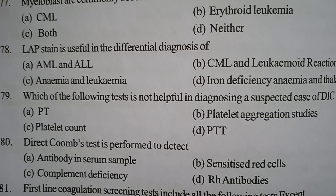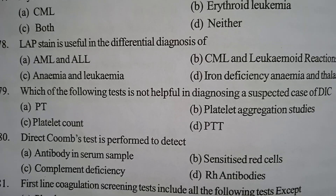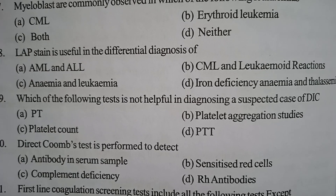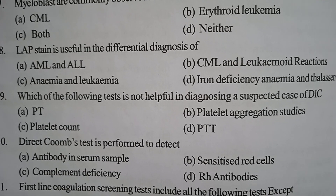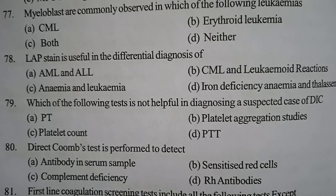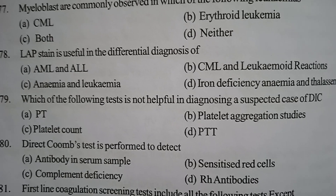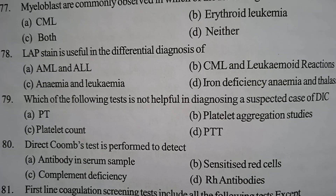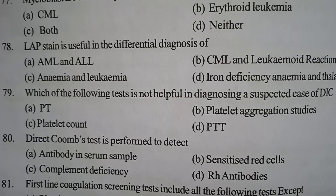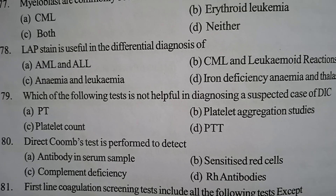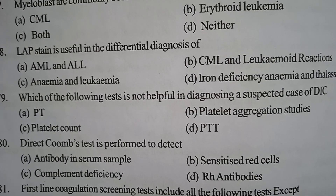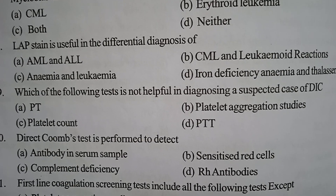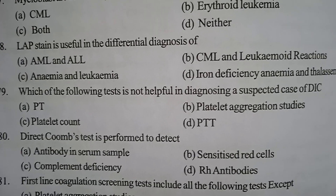Next one: direct Coombs test is performed to detect? Option A: antibody in serum sample. Option B: sensitized red cells. Option C: complement deficiency. Option D: Rh antibodies. Correct answer: option B, sensitized red cells. In the direct Coombs test, sensitized red cells means there is antibody on the red cells which does not produce clear agglutination, but after adding Coombs reagent we can observe the agglutination.